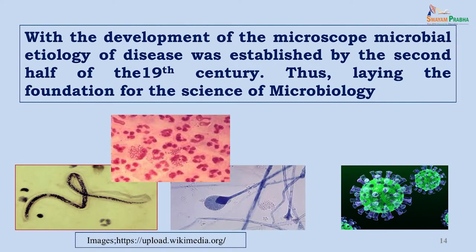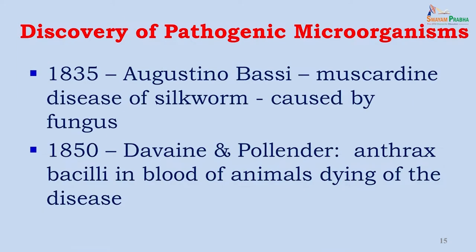With the development of these microscopes and further versions, the microbial etiology of disease was established in the second half of the 19th century, laying the foundation of the science of microbiology, and bacteria, parasites, fungi, and viruses were described by various people over the years. However, microbes as pathogenic organisms had to wait some time before they were confirmed as pathogens. In 1835, the first confirmed pathogen caused a disease of silkworms caused by a fungus, but it was not a human pathogen. The first human pathogen confirmed to be caused by a bacterium was the anthrax bacillus, seen in the blood of animals dying of the disease.